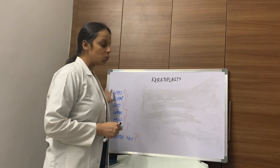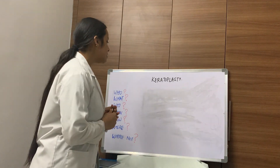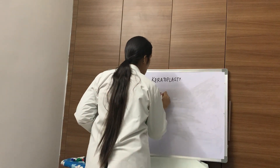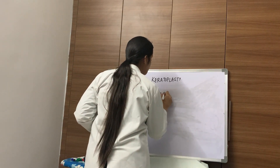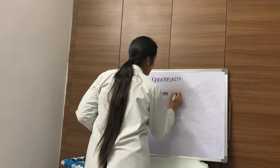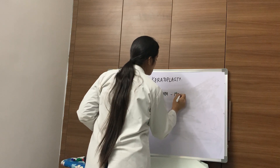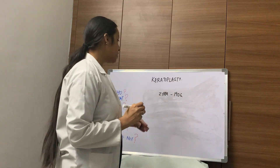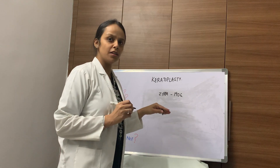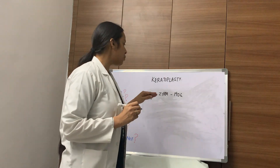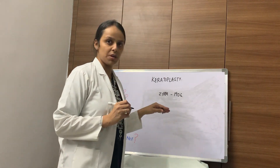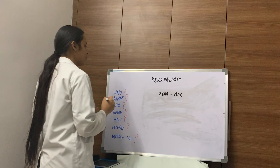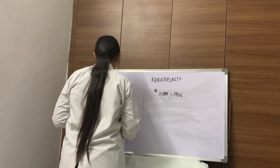My first question is: who? The first successful keratoplasty was performed by Zerm in 1906. The graft he performed remained clear for approximately 18 months. So, the first successful keratoplasty was performed by Zerm.